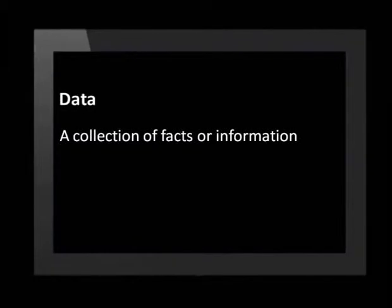Let's revise a few definitions. Data is a collection of facts or information. Examples of data include the prices of the food at the school tuck shop and the names of all the people in your class. We gather data by making observations, counting, measuring or from responses to surveys. Data that has not been organised in any way is called raw data.